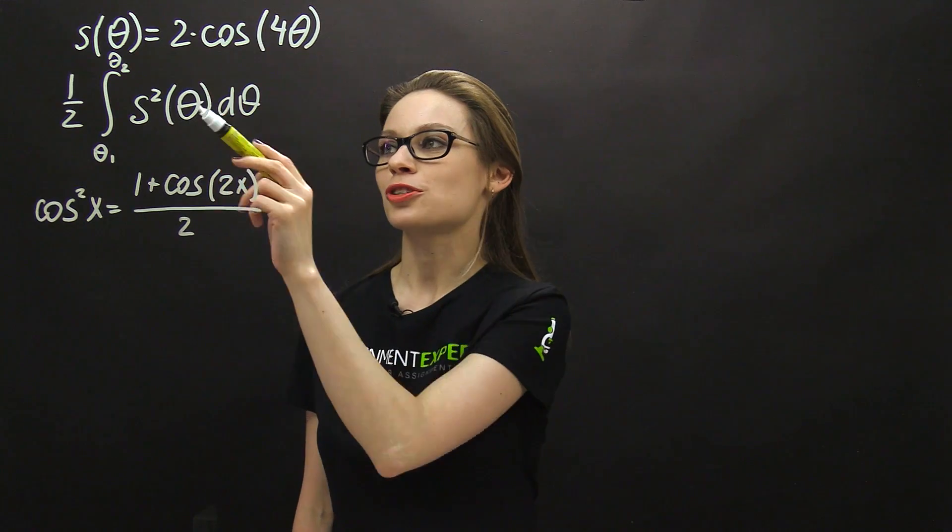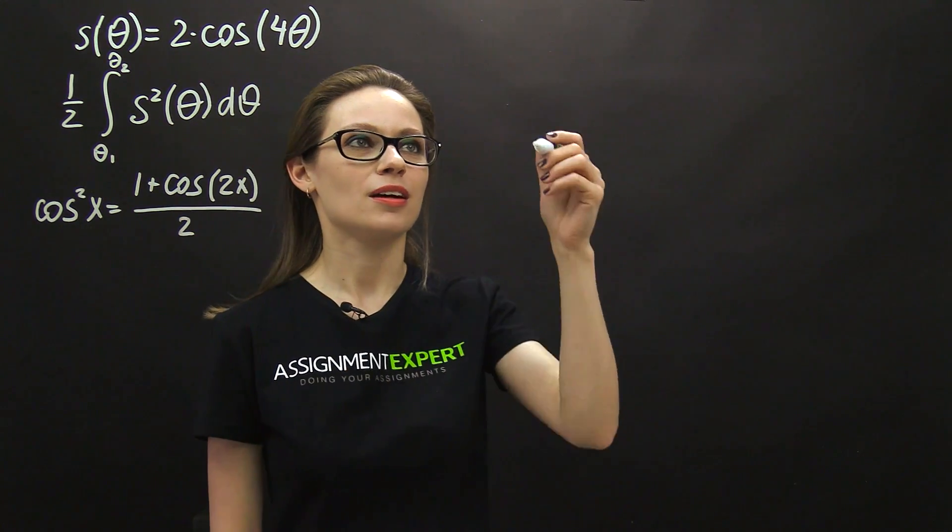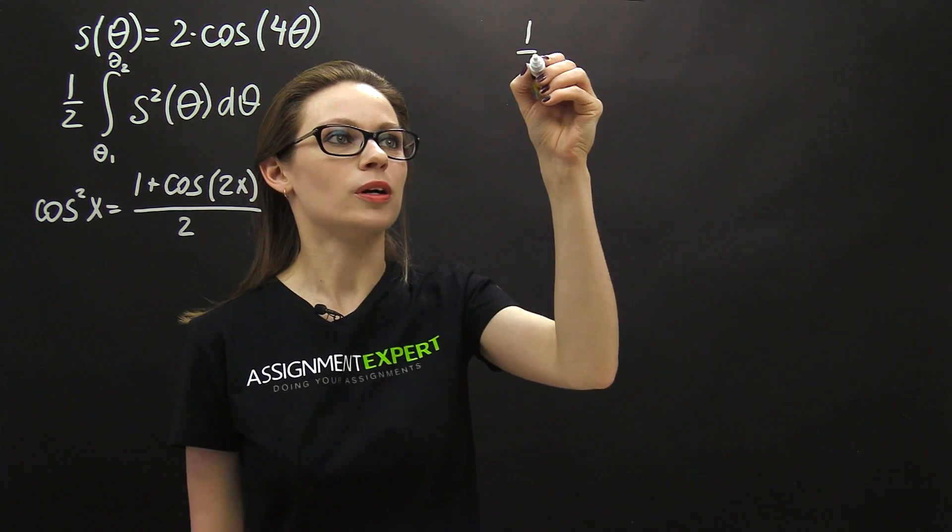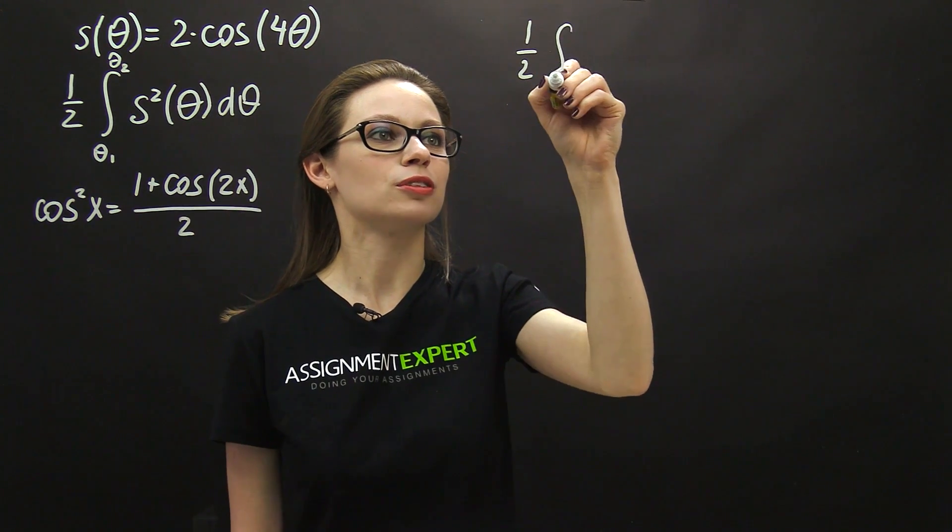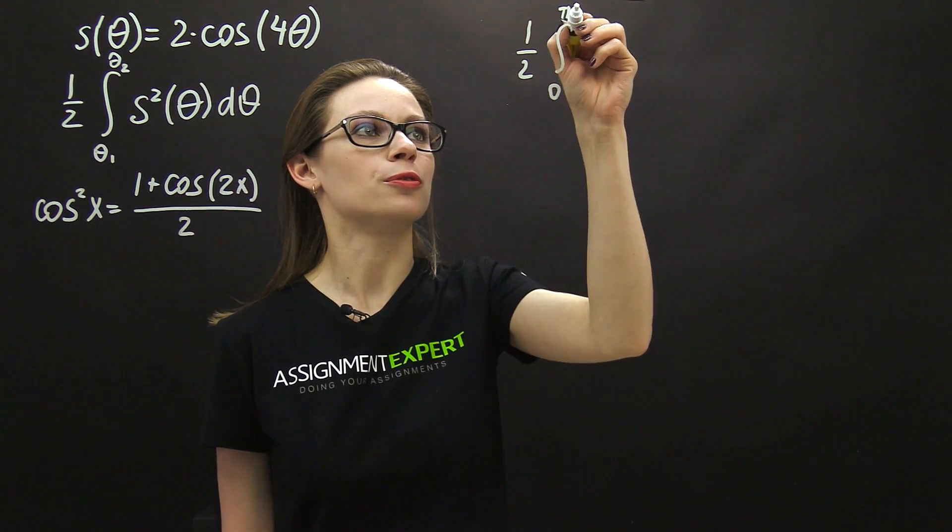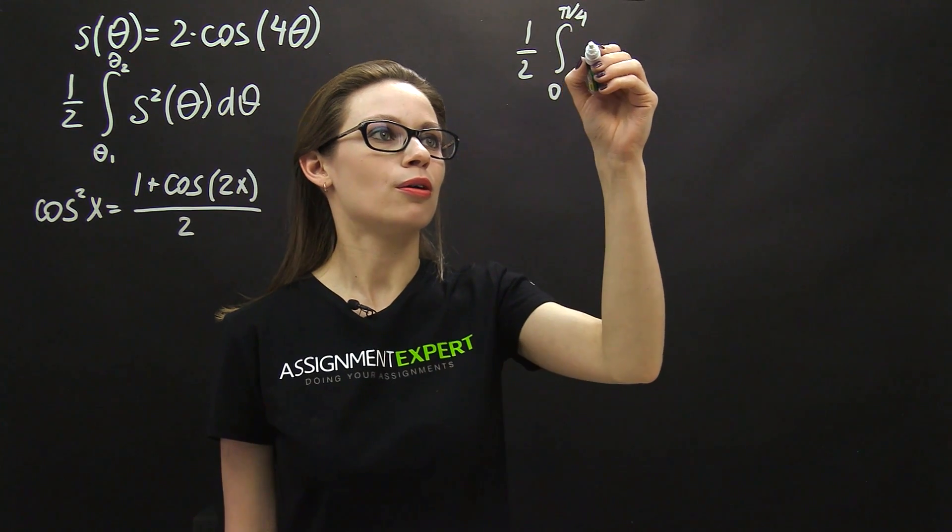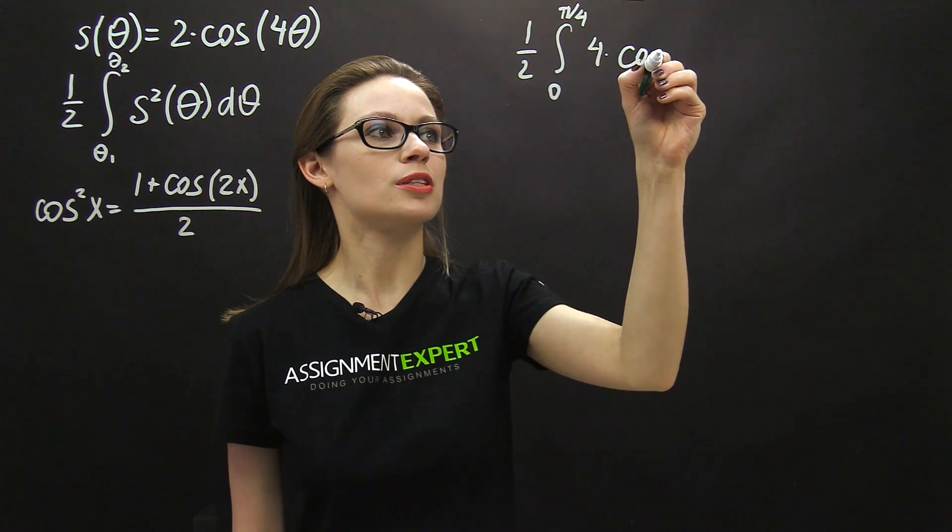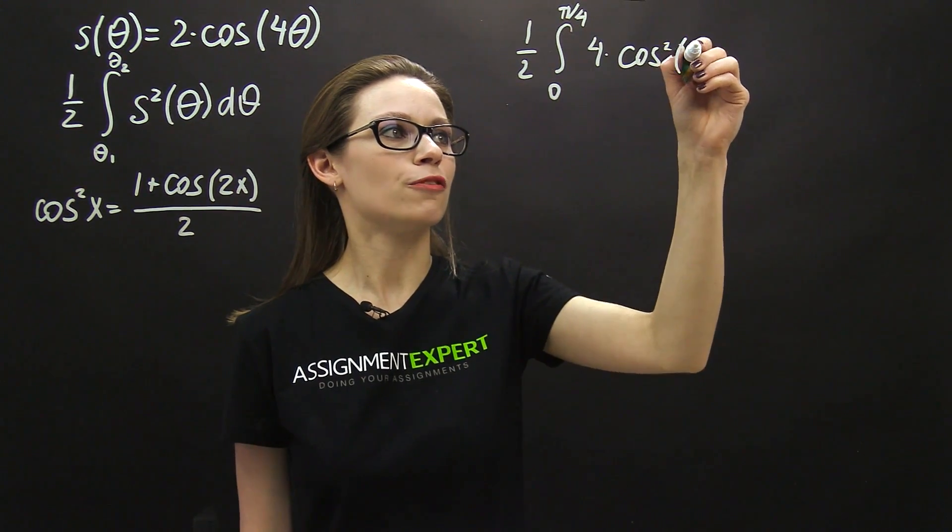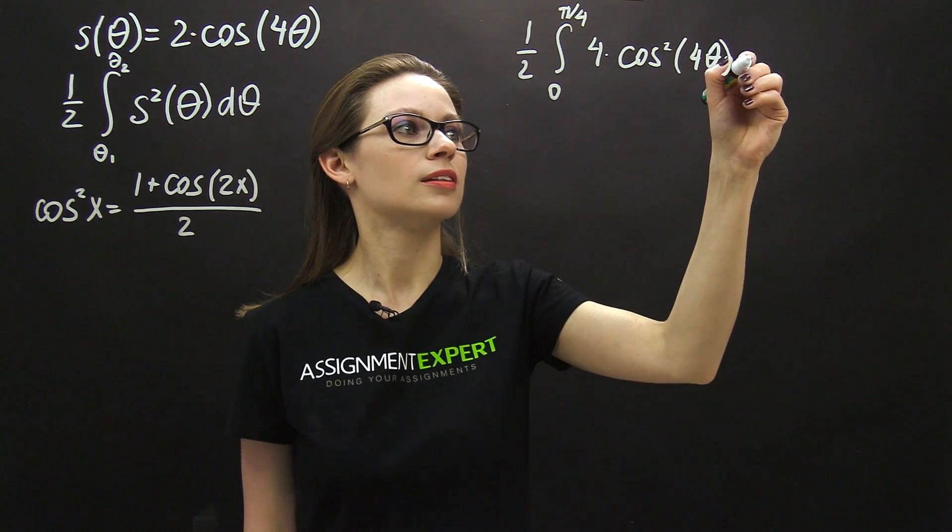So, let's substitute our function into this formula. We'll have 1 half times the integral from 0 to pi over 4 of 4 times cosine squared of 4 theta d theta.